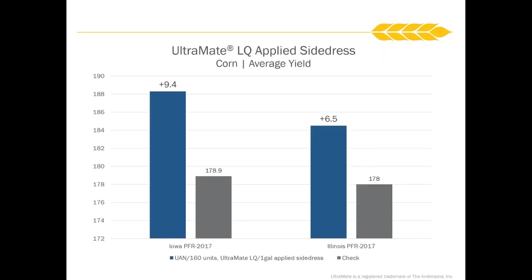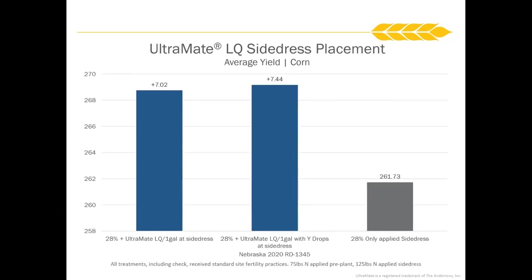We've tested this product across lots of different regions from east to west. Here are a couple of samples from Iowa and Illinois where we've done side dress applications in some really good, high-fertility scenarios, and we're seeing a nice increase in bushels when we add the Ultramate into that side dress application. This is another one from Nebraska — a wide drop in a colder cart versus 28% alone — and even in a scenario where we were seeing 260-plus bushel corn, we saw a nice increase when we added that humic acid on that side dress because we're protecting that nitrogen.